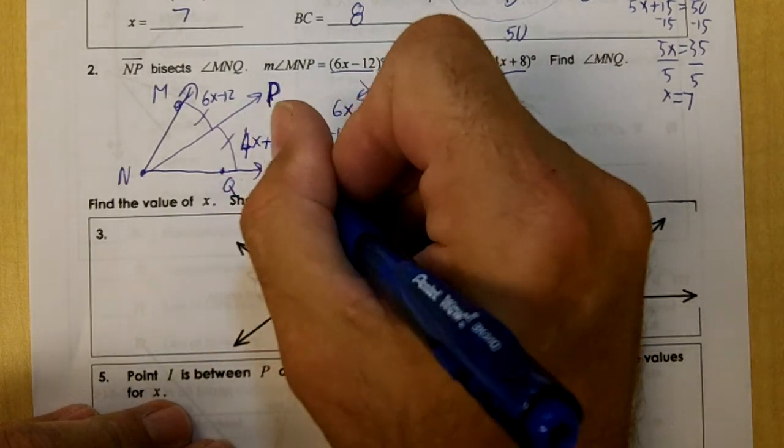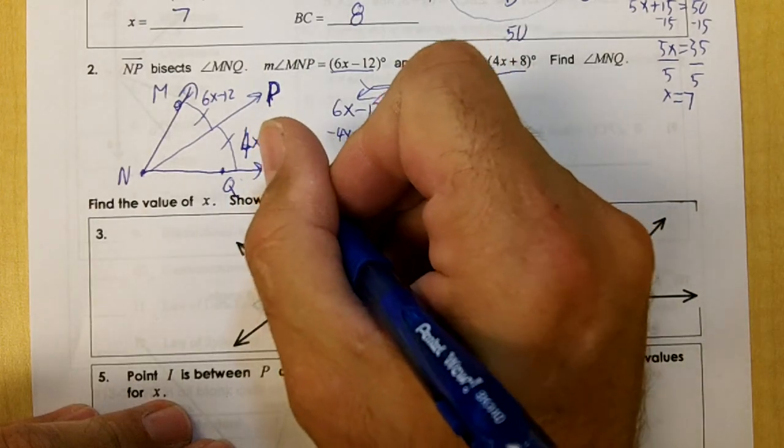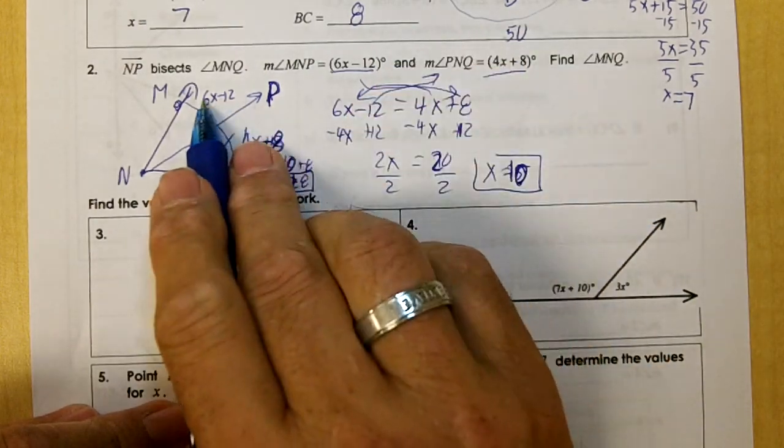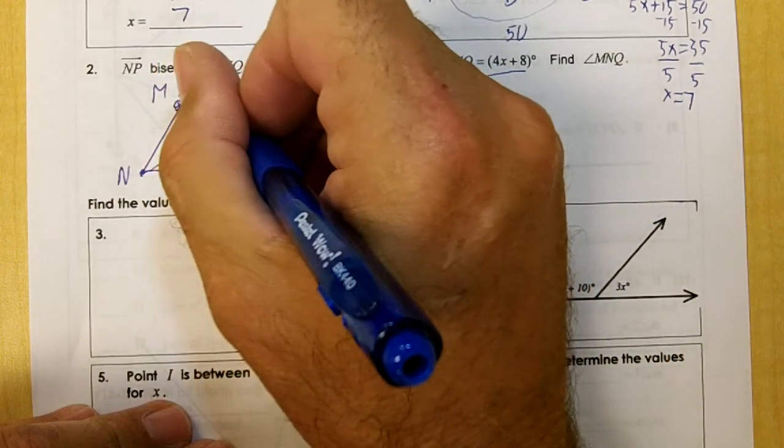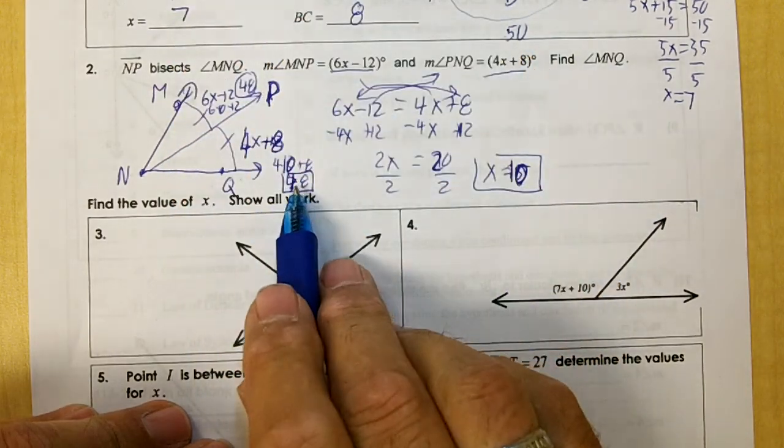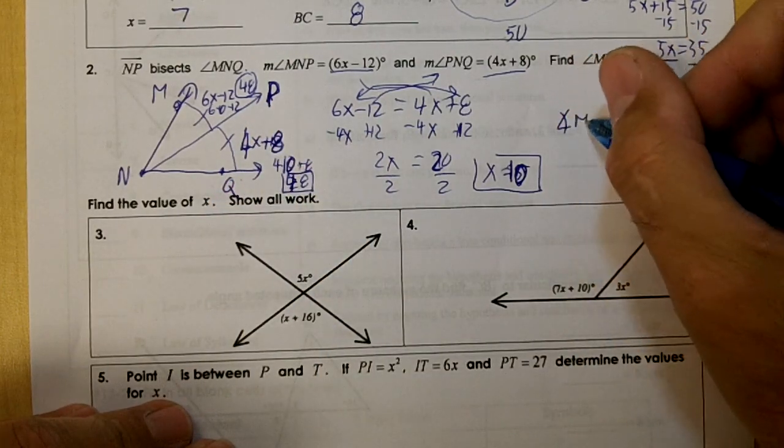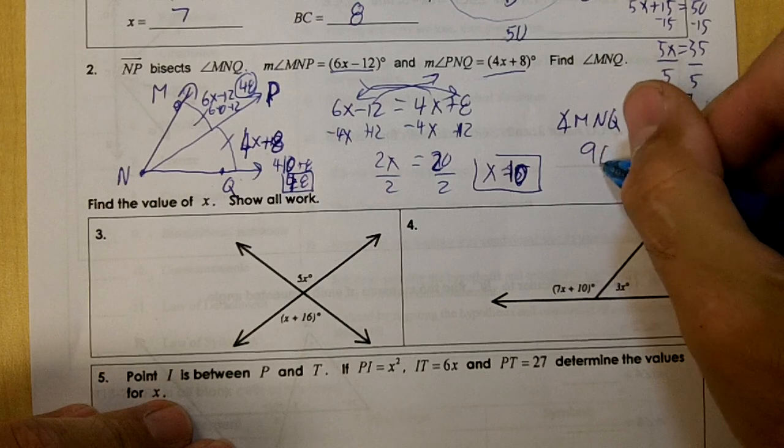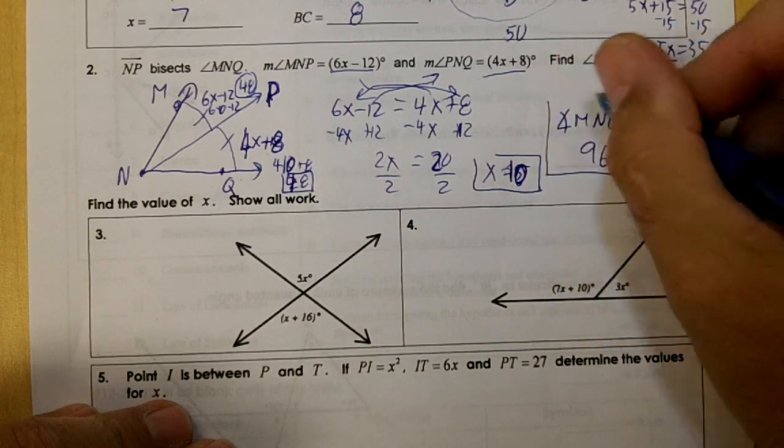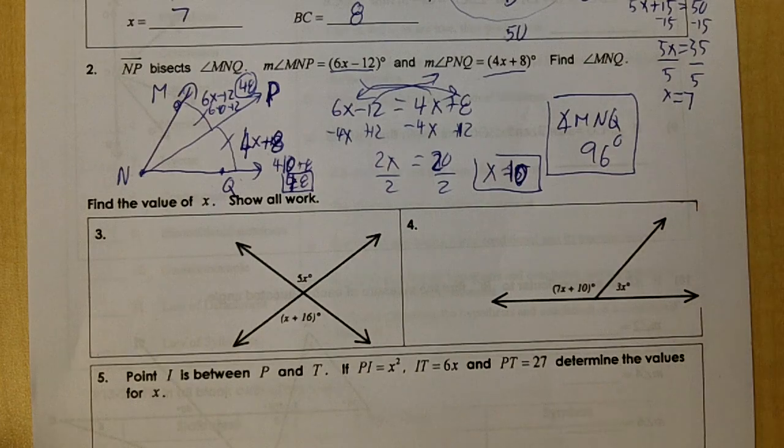And then plug in 10 here. 4 times 10 is 40 plus 8 is 48. 6 times 10 minus 12 is also 48. So we know that that angle is 48, and that angle is 48. The whole angle is going to be 96. So angle MNQ is 96.